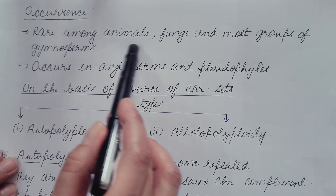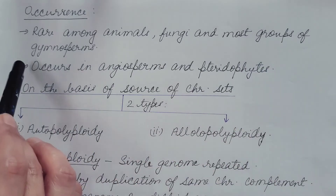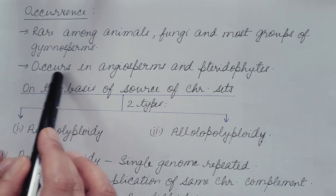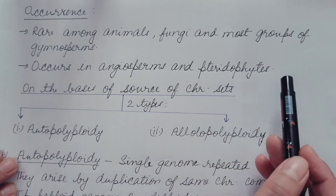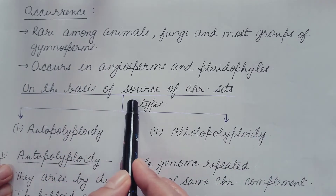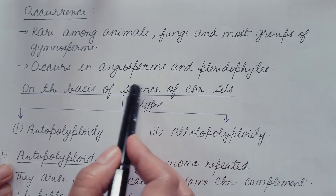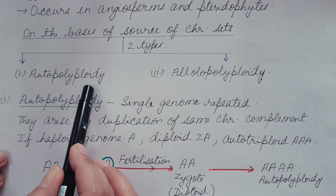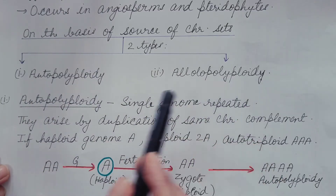Where does polyploidy occur? It is rare among animals, fungi, and most groups of gymnosperms. It commonly occurs in angiosperms and pteridophytes, making it more common in plants. On the basis of source of chromosome sets, polyploidy is of two types: autopolyploidy and allopolyploidy.